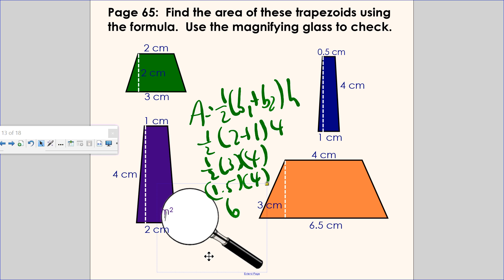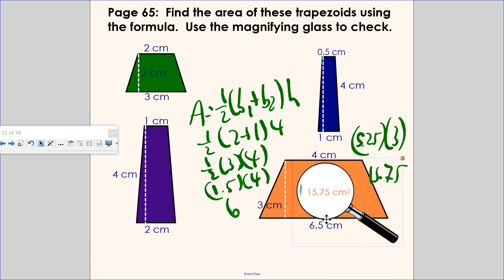And this one, you add up the two bases, that would be 10.5. Half of 10.5 is 5.25 times the height of 3, that would be 15.75. And that is correct. So again, to find the area of a trapezoid, you just add up the two bases, then you do half of it times the height. Area of the trapezoid.